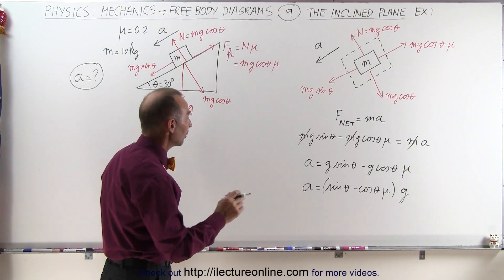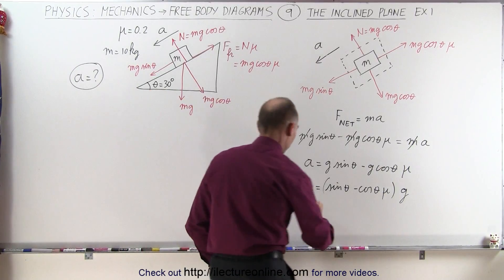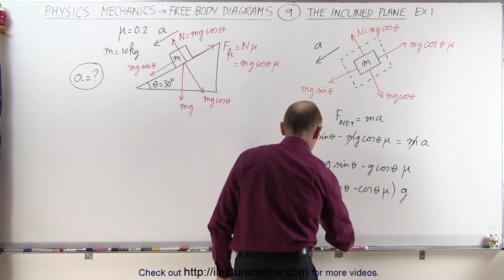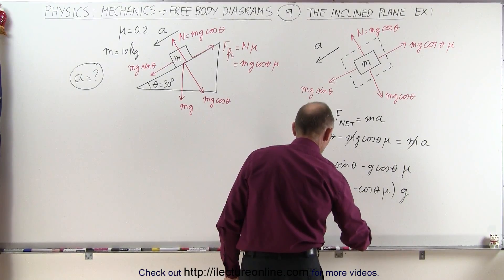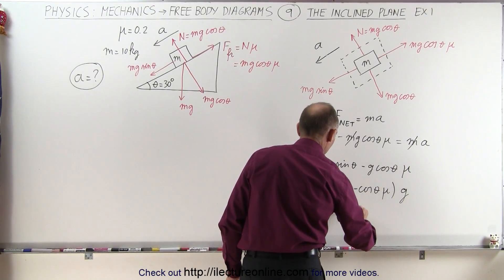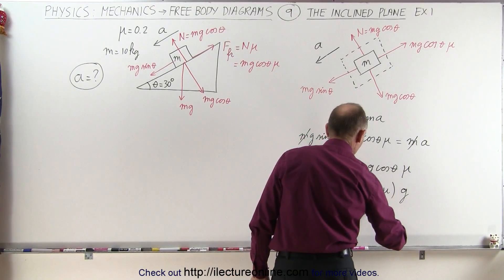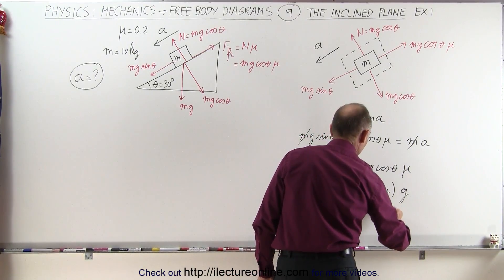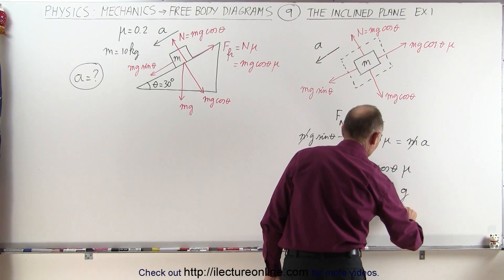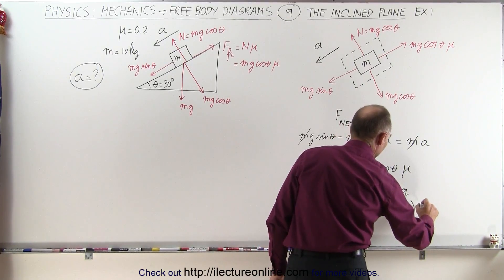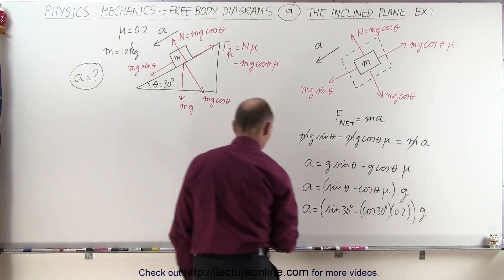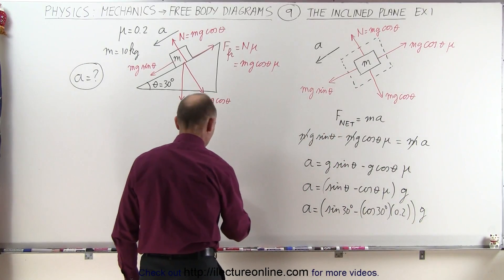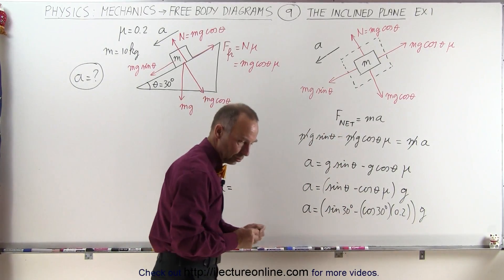Now if we want to find the actual acceleration, we plug in the numbers. We have a equals sine of 30 degrees minus cosine of 30 degrees times 0.2, all multiplied by g.